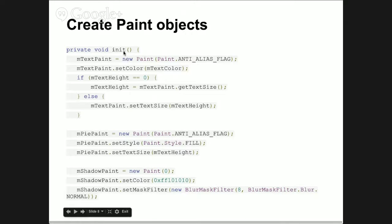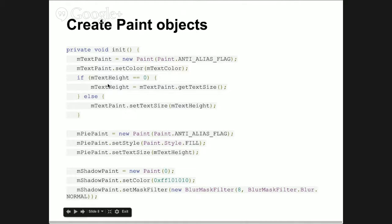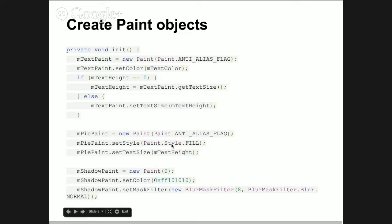For example, this is an initialization in which we say that the text paint to draw text is a new paint. It has an anti-alias flag set so that the text is not pixelated. You can set it to a specific color and set a text size. This is taken from an application that draws a pie chart. The pie paint has anti-alias and a style of FILL so that if you draw a triangle, it would be filled. So the paint is essentially the attributes of the brush.